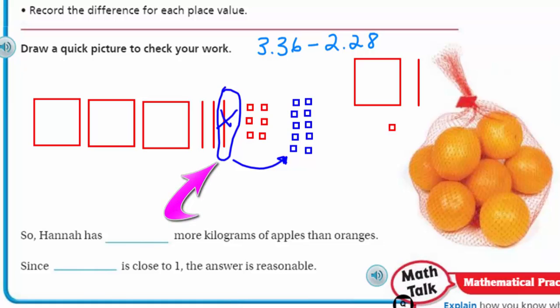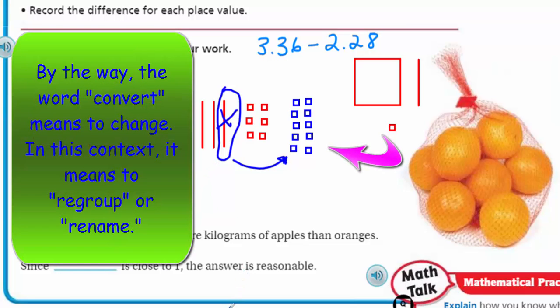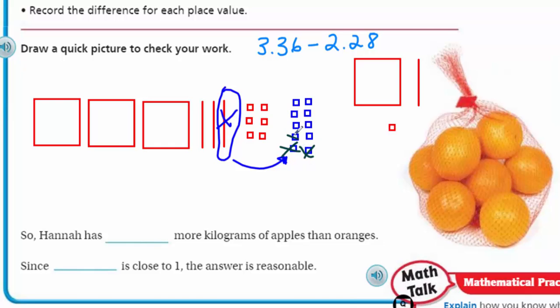You see I regrouped. I took my one tenth right there and I converted those ten hundredths from that one tenth. That's how I got my ten hundredths over here. Now I can go ahead and subtract eight of them. That leaves eight hundredths. Now I need to take away two tenths. I had three, I only have two left, but I can take away two. Now there's no more tenths left, it's zero. But it's okay because we still have some whole numbers. I'm taking away two wholes, so now I only have one whole left.